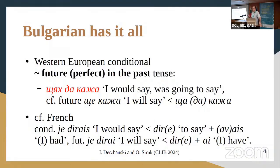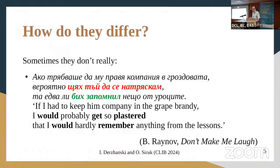It is very nearly exactly parallel to the form which is called conditional in the grammars of the Western European languages. But Bulgarian has a separate conditional. So how do these two things differ? What is Bulgarian doing having these two categories, which on the face of it should be the same?